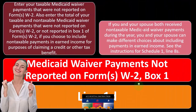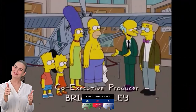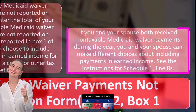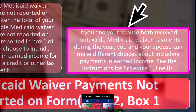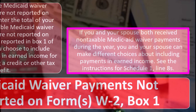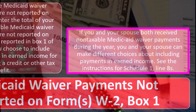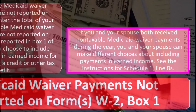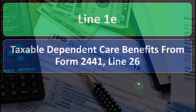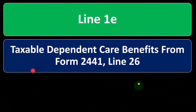If you and your spouse both receive non-taxable Medicaid waiver payments during the year, you and your spouse can make different choices about including payments in earned income. See the instructions for Schedule 1, lines 8S, if you want to look into more detail on that.